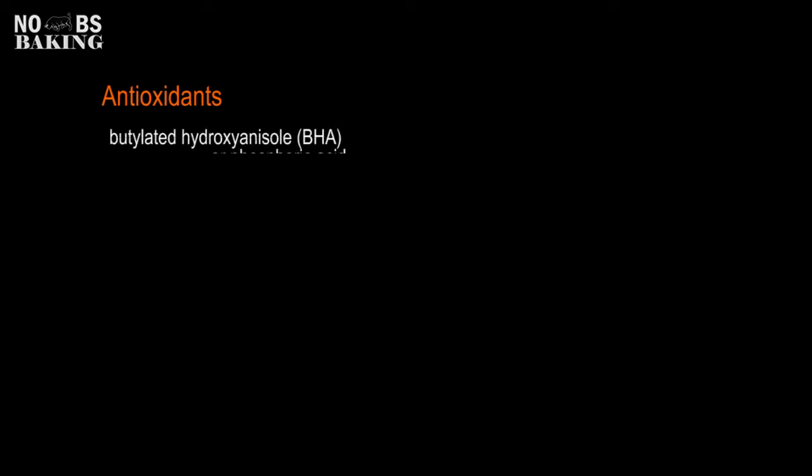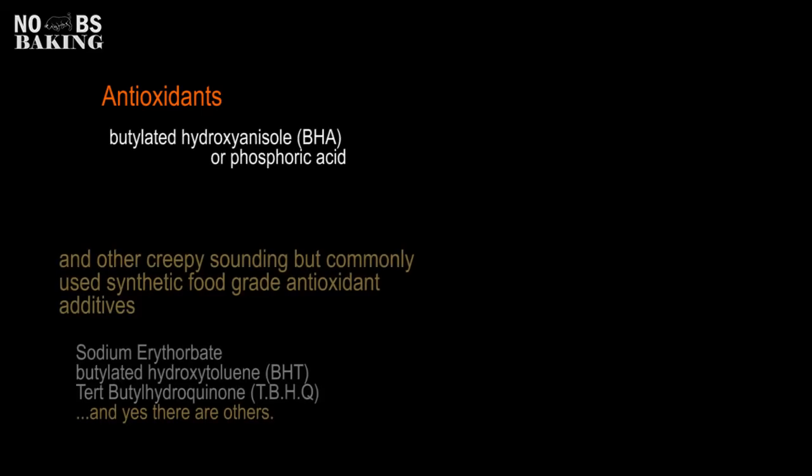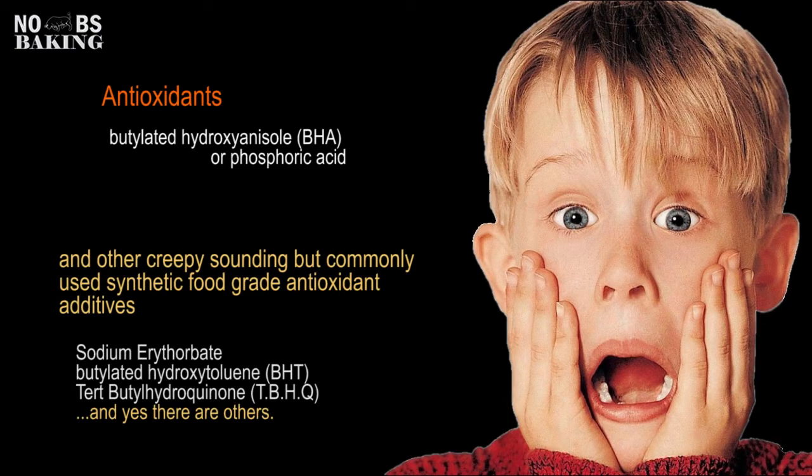Continuing our understanding of preservatives, I want to quickly cover antioxidants. They can be found in many food products and ingredients we as bakers may incorporate into our home-baked goods without thinking too much about it. Synthetic antioxidants such as butylated hydroxy-anisole (BHA) generally last longer than natural antioxidants, and can still be found being used to extend shelf life in various vegetable oils, some shortenings, margarine, and butter to prevent oxidative rancidity.